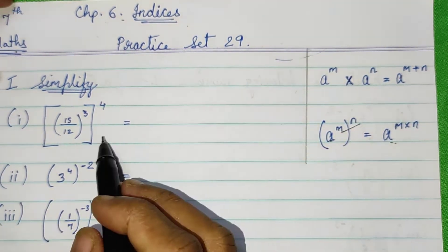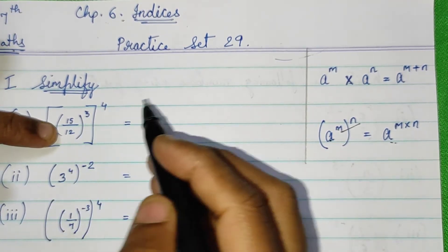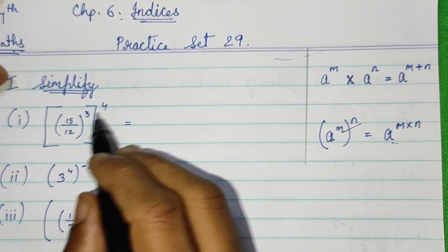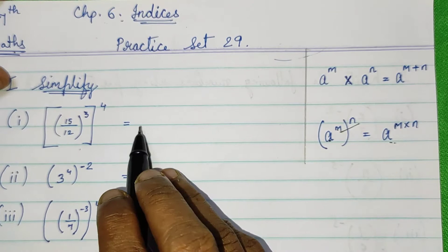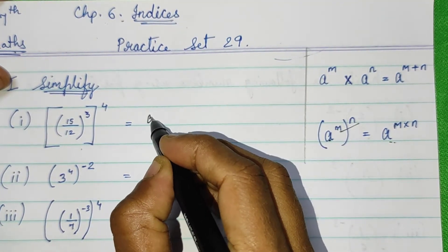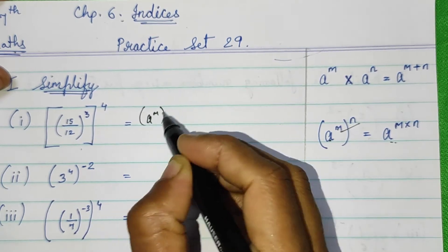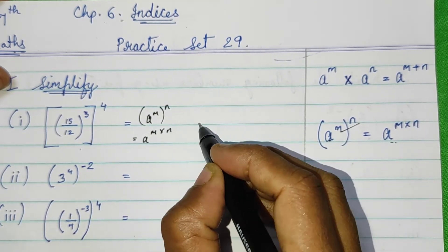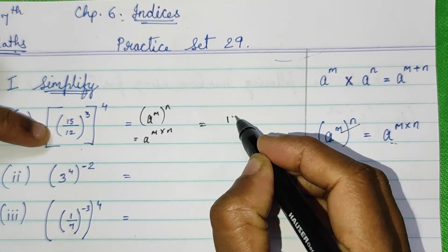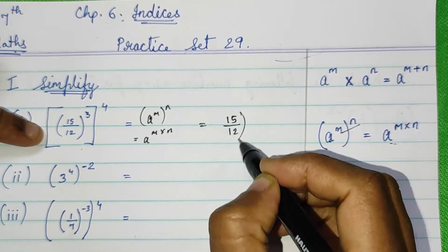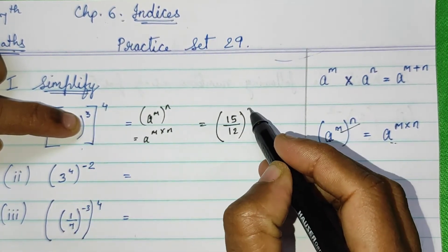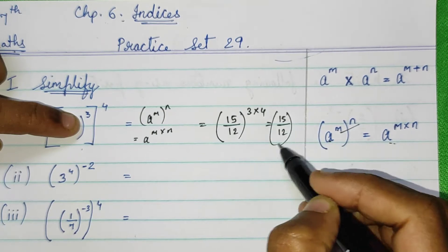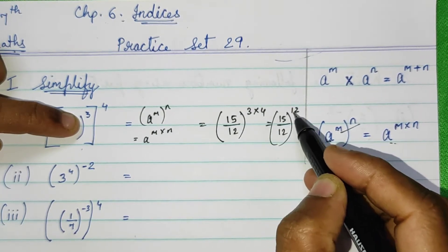Let's see how we will solve. Here, you can see 15 upon 12 raised to 3 and then the whole is raised to 4. Before writing, you have to show formula: a raised to m the whole raised to n is equal to a raised to m into n. So these sums will go like this: 15 upon 12 raised to 3 into 4, 15 upon 12 raised to 3 times 4 is 12. This is your answer.